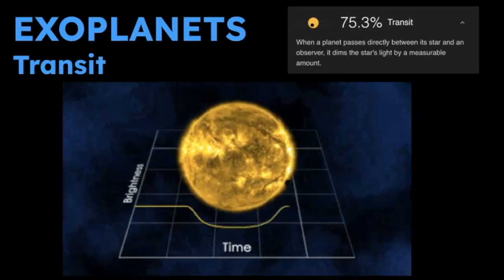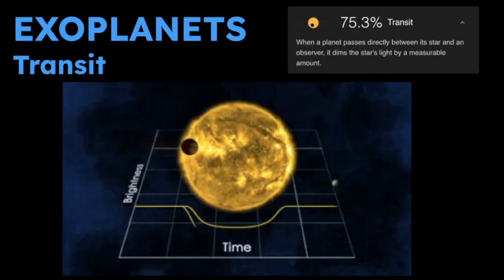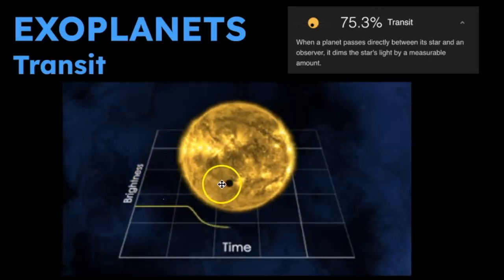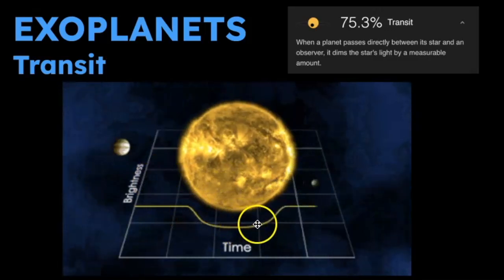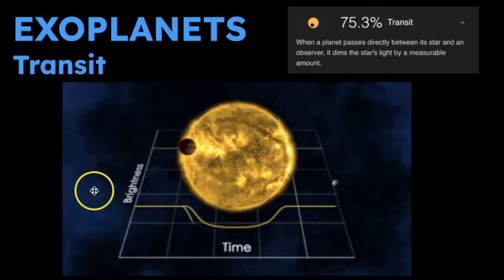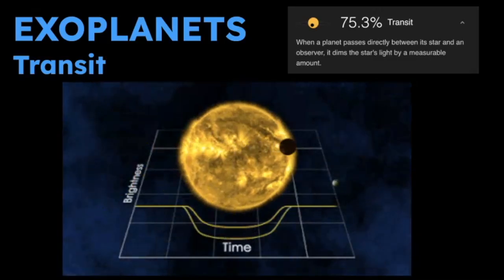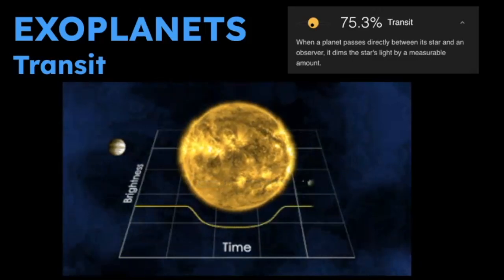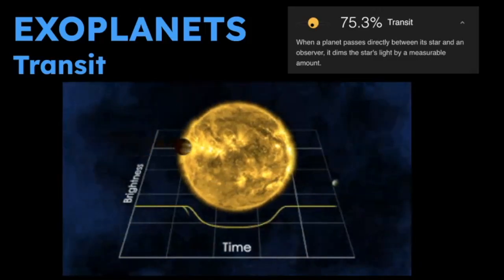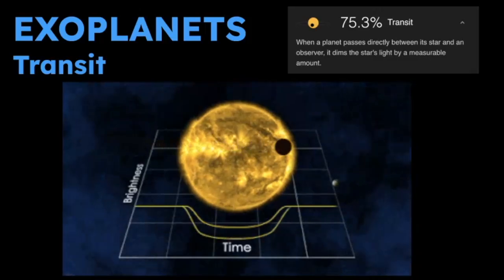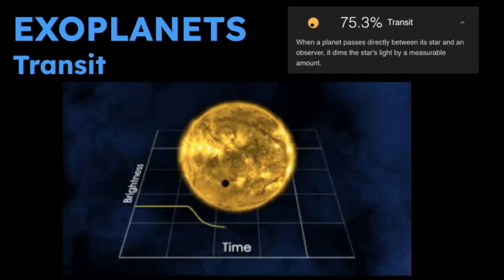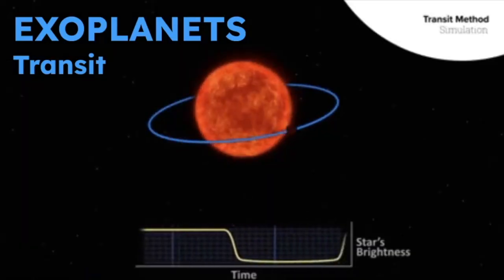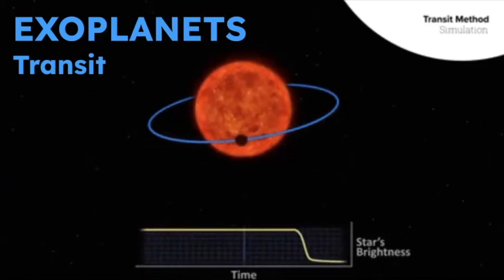The most common way we detect exoplanets is through the transit method. As you watch this animation, notice when a small planet goes in front of the star, there is a decrease in brightness. But when a bigger planet goes in front of it, we see even more of a decrease, which astronomers can detect to calculate the presence of a planet or even a family of planets. Here's another diagram showing the planet passing in front and the star's brightness changing over time.